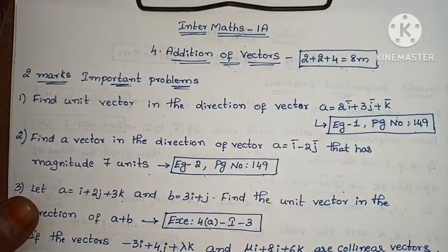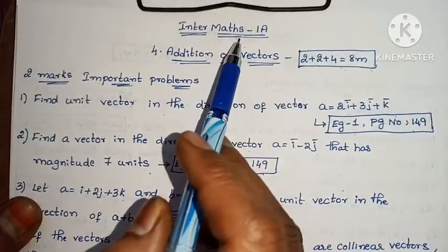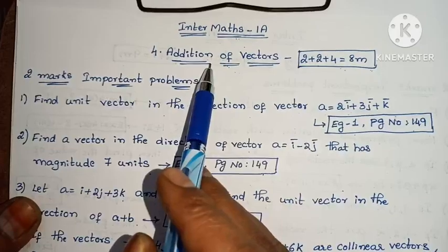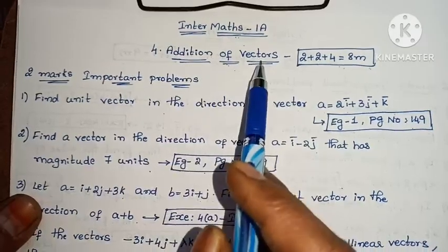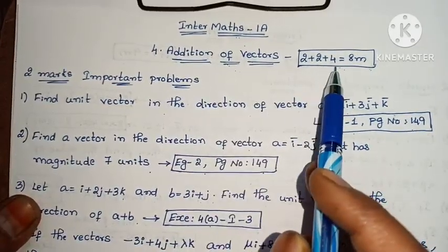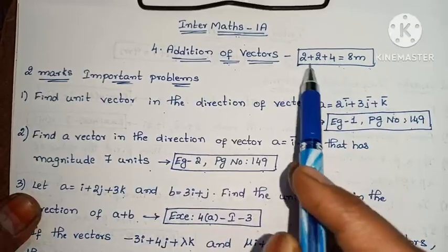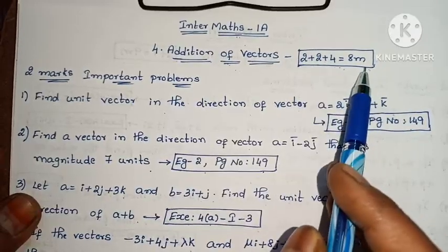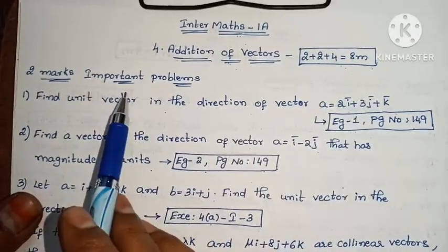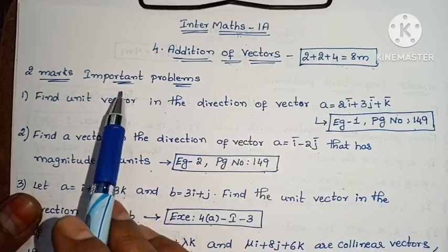Hi, welcome to Paranika Maths. We have the 4th chapter, edition of vectors. In this chapter, we have 2-mark problems, 4-mark problems, and 8-mark problems. First, we have the 2-mark important problems.